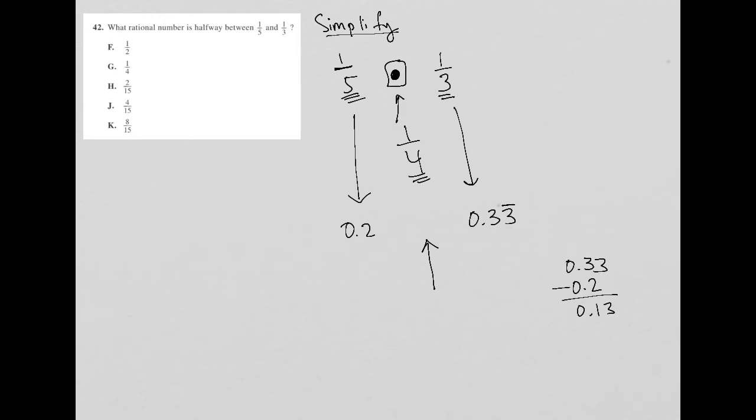Half of that, so 0.13 divided by 2. Let me just go to my calculator. I'm pretty sure it's 0.065. But let's make sure, because that's the best thing to do on this test. So 0.13 divided by 2 is 0.065.